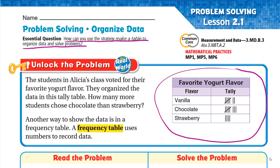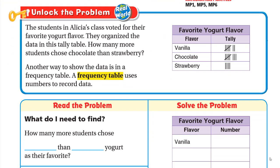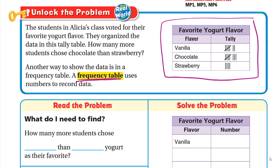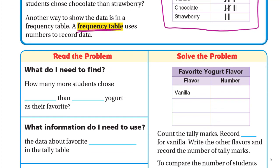Let's unlock the problem. The students in Alicia's class voted for their favorite yogurt flavor. They organized the data in this tally table. The question is: how many more students chose chocolate than strawberry? A frequency table uses numbers to record data, so we need to fill in a frequency table using the tally marks from the tally table.